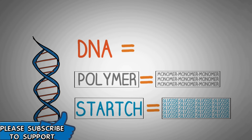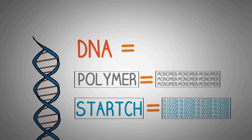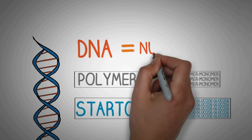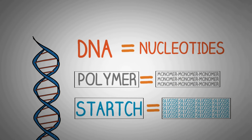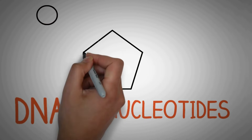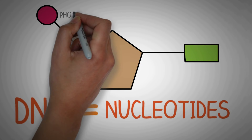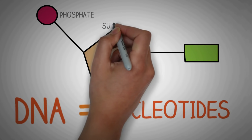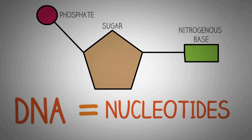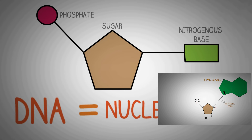In a similar way, DNA is also a polymer, and in this case the monomeric units which form the polymer DNA are known as nucleotides. This is the basic structure of a nucleotide — you can see that it consists of three important groups: the phosphate, the sugar, and the nitrogenous base.